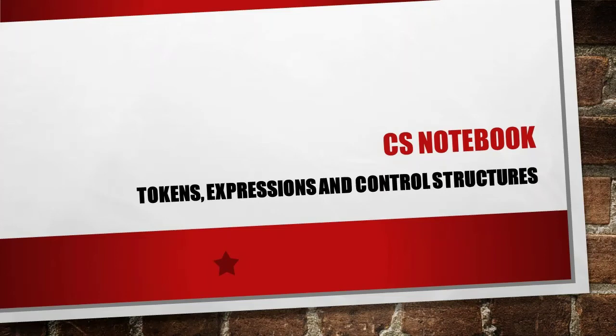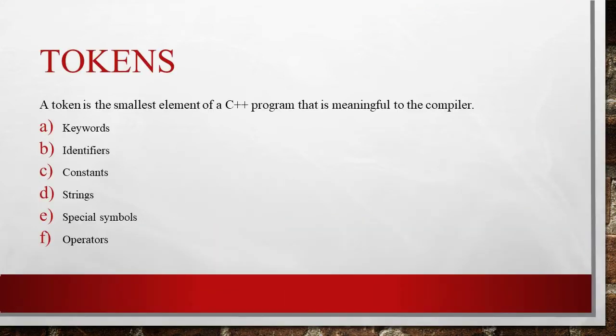Hello guys, today we take a look at tokens, expressions, and control structures in OOP. First, let's see what is tokens. The smallest individual units in a program are known as tokens, and C++ has many types of tokens.